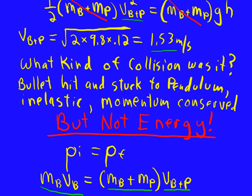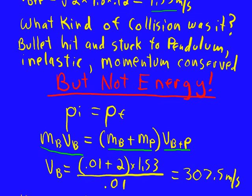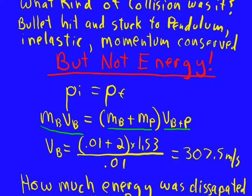We already figured out how fast the bullet and pendulum are going. We're working our way backwards. Solving for the velocity of the bullet, we get 307.5 meters per second.